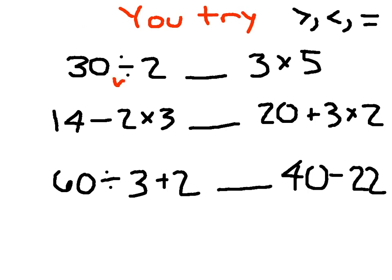Here we go. 30 divided by 2 was 15, and 3 times 5 is 15. So you should have had an equal sign. Give yourself a pat on the back if you got that one correct.